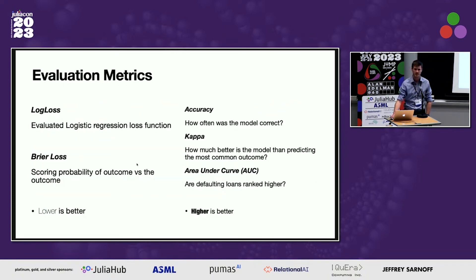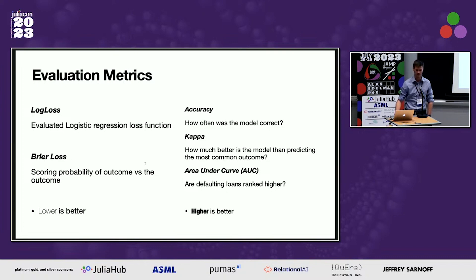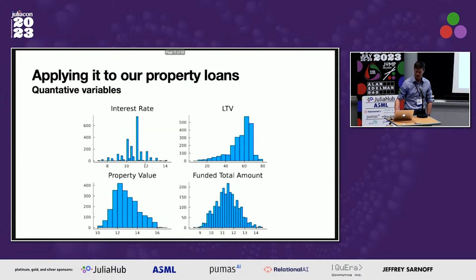For evaluating whether our models are good at predicting loan defaults, we use log loss and Brier loss as our loss functions — we want these as low as possible. We also use accuracy, the kappa metric (how much better than a null model), and AUC, which checks whether we're ranking defaulting loans higher than non-defaulting ones. For these metrics, higher values are better.